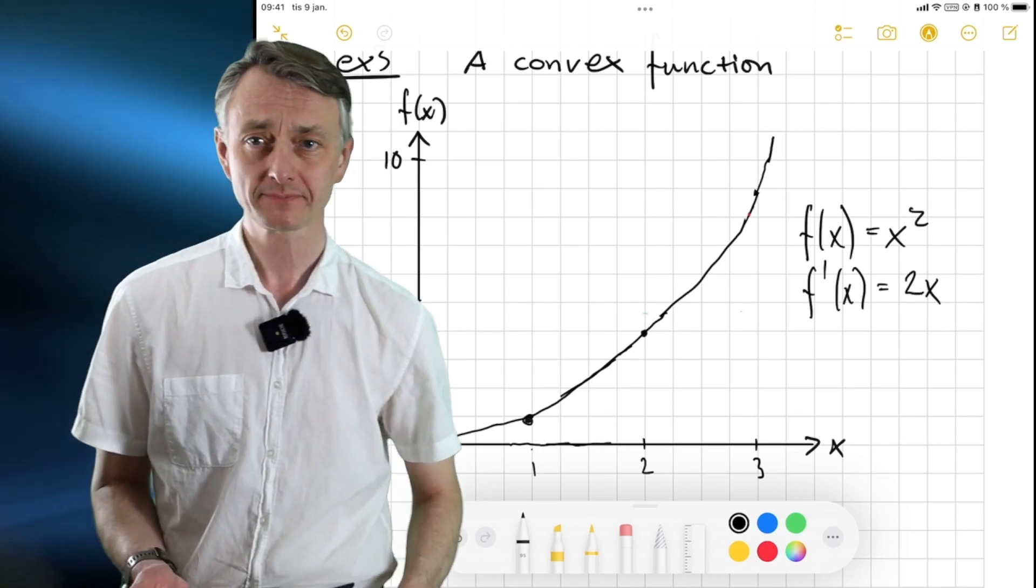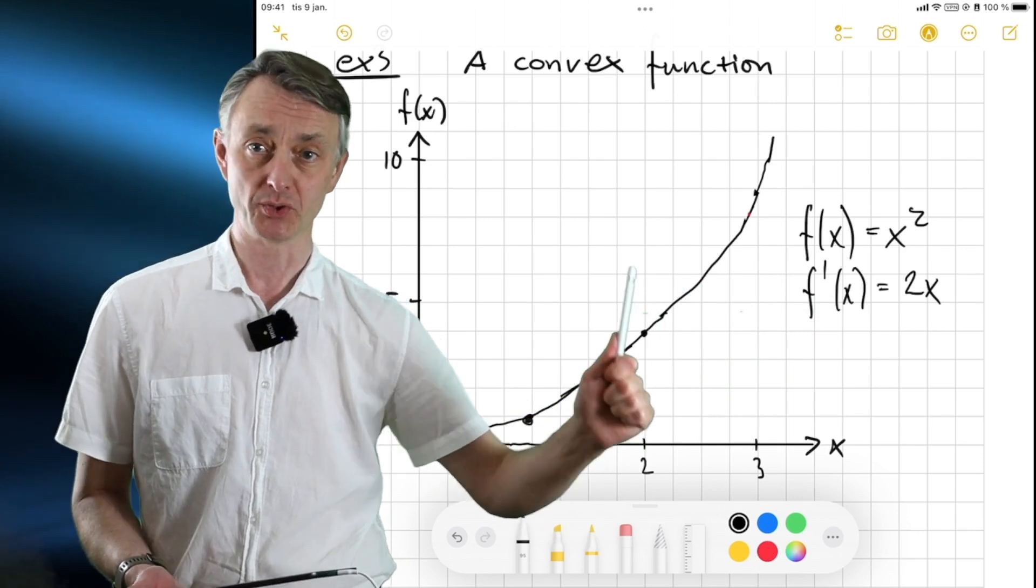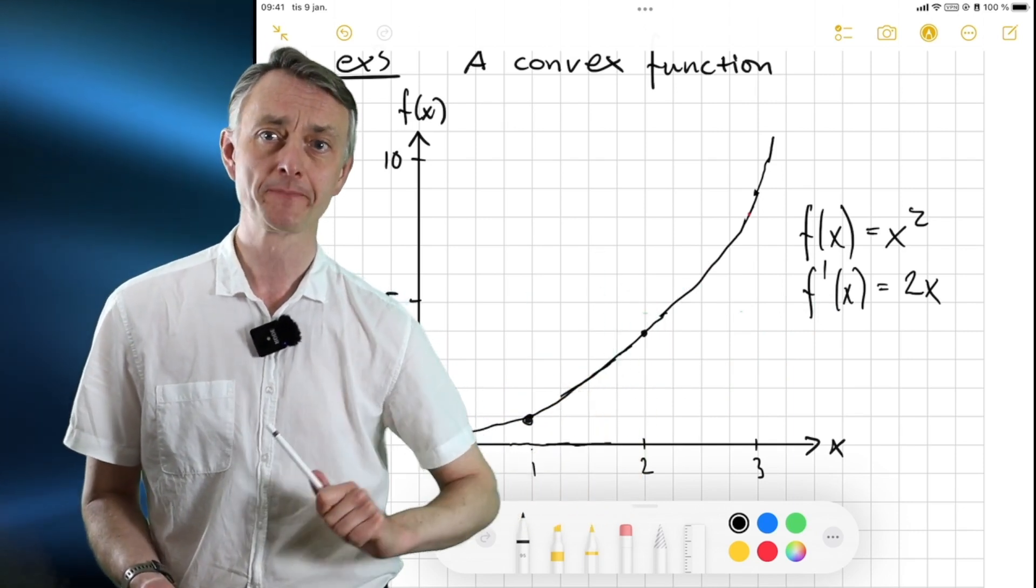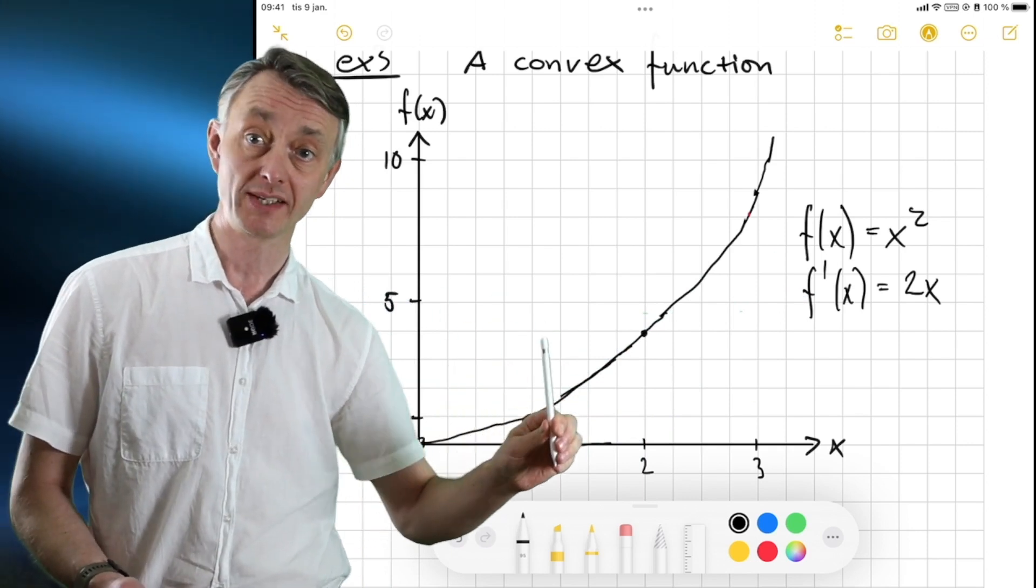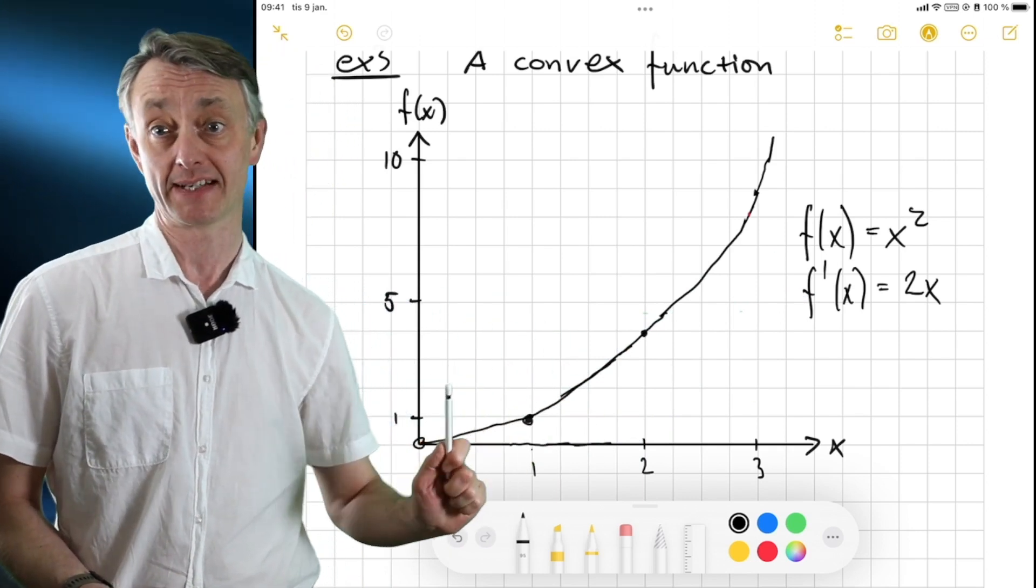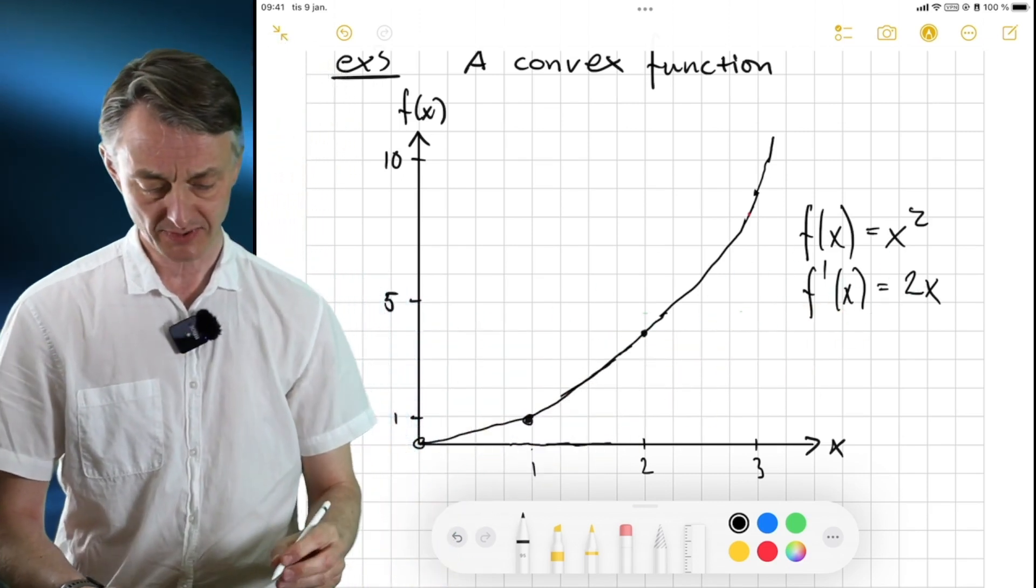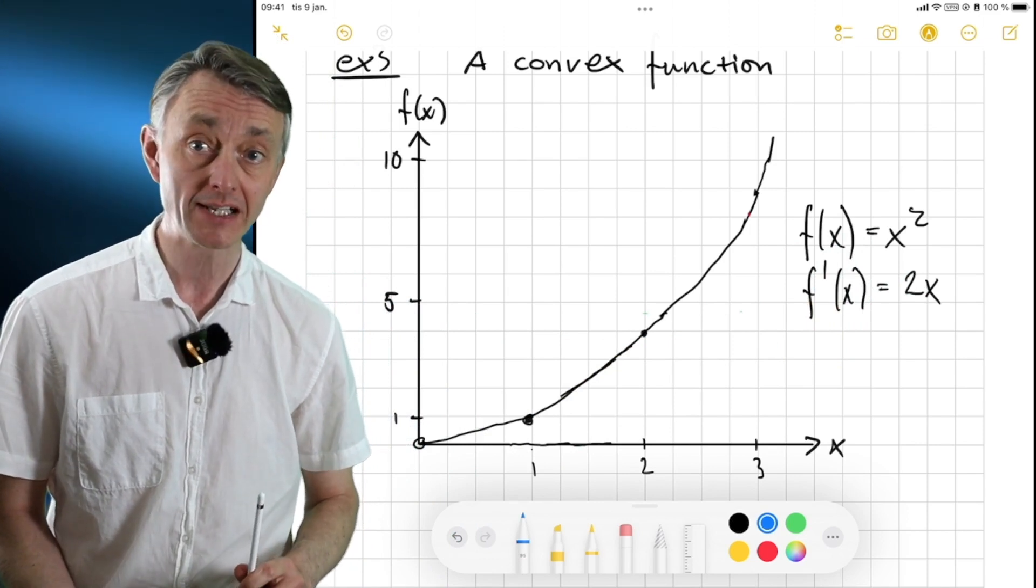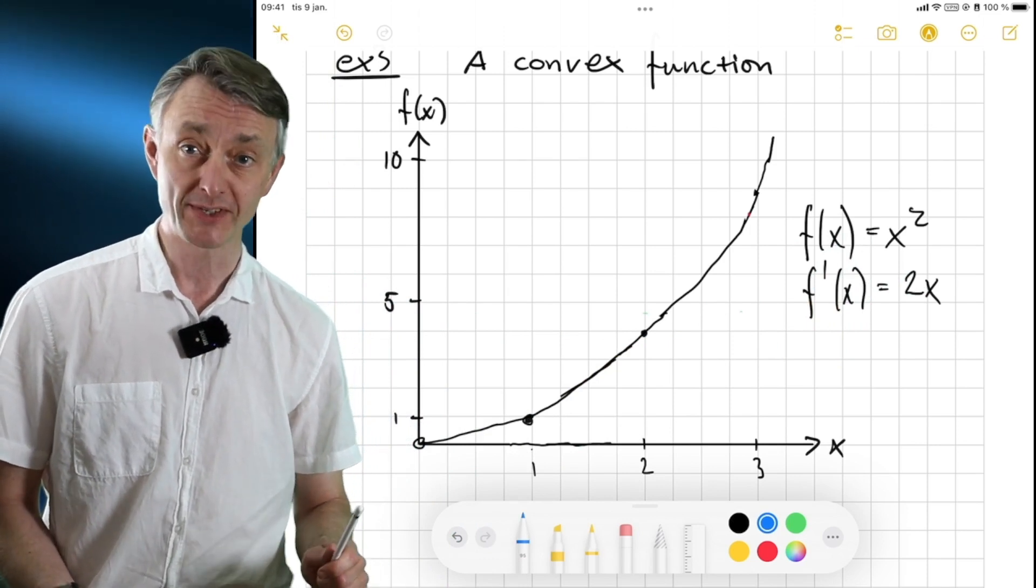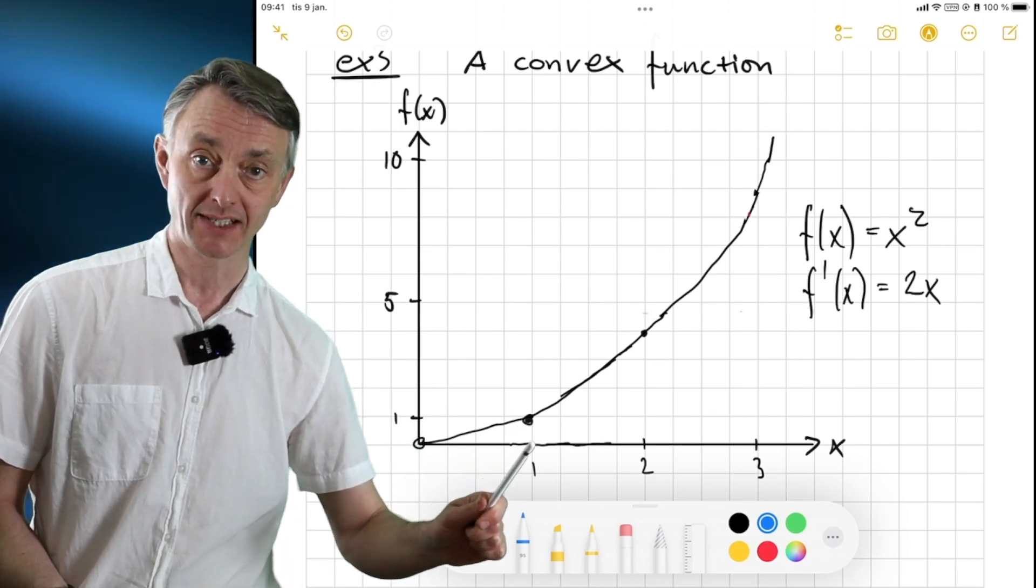And remember, the definition of a derivative is, you remember the Newton quotient, is how much up do we go when we increase the value of x just a little bit? And it's going to be increasing in x. So, let's look at this. What is then the value of the derivative of this function when we are evaluating it at x equal 1?